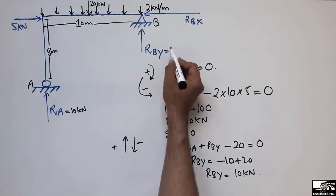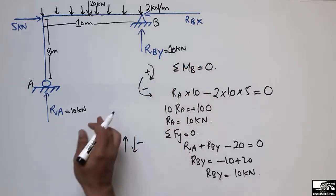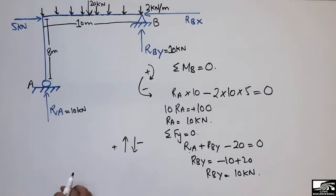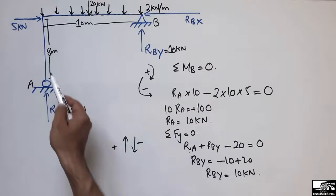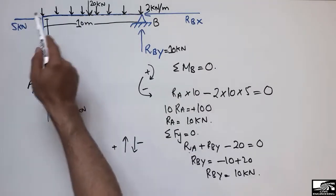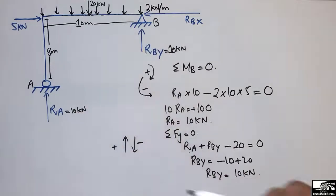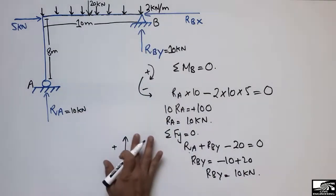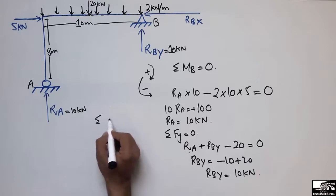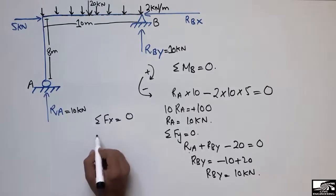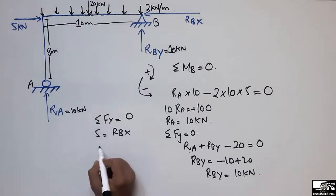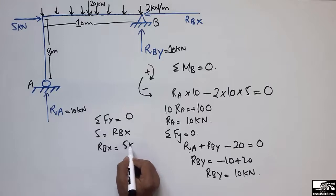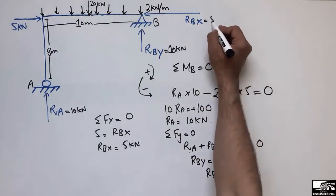For the horizontal direction, the 5 kN lateral load cannot be resisted by the roller support, so the whole 5 kN is resisted by the hinge support. Taking summation of horizontal forces equal to zero: RBX = 5 kN. So the horizontal reaction at the hinge support is 5 kN.